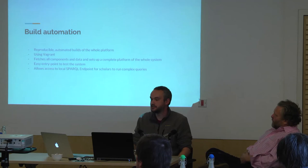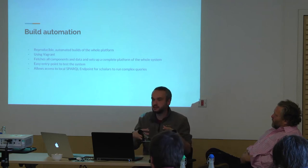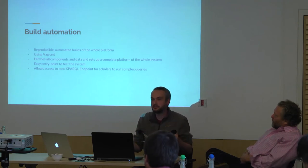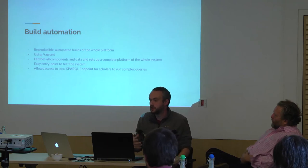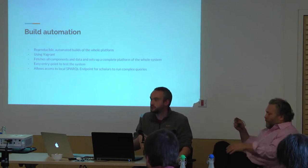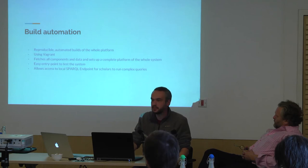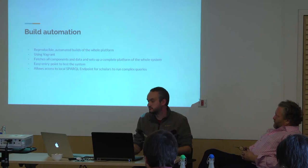A nice feature we've added is build automation. Through a software called Vagrant, you can download a script that will automatically fetch a Linux virtual machine, install all the dependencies of our platform, all the source code, all the data, and serve it on your local computer. That's how we ourselves have set up our development platform on our laptops and also on the servers we have. You can very easily have a complete platform on your laptop and do some search — it's just a matter of launching the script.